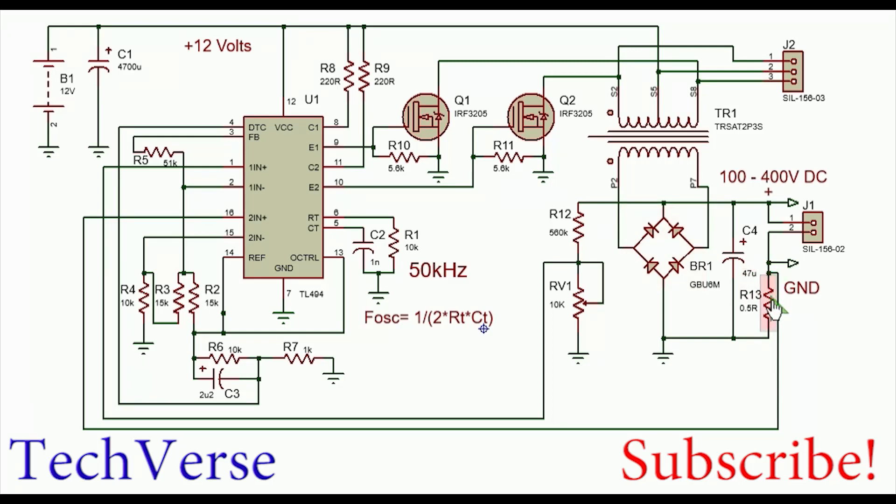Current sensing on the secondary is achieved whereby when there is a voltage drop of about one volt here, there will be feedback to compensate for the duty cycle so that it will reduce. This will reduce the current being pumped to the secondary side. This acts as a short circuit protection.